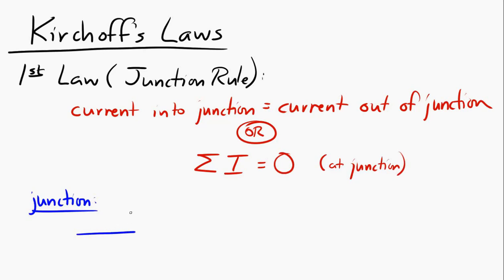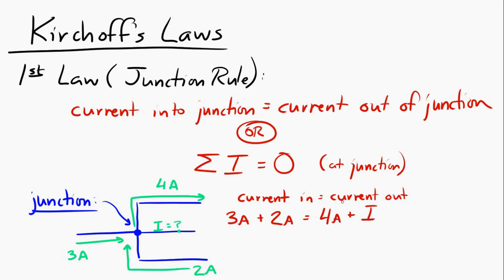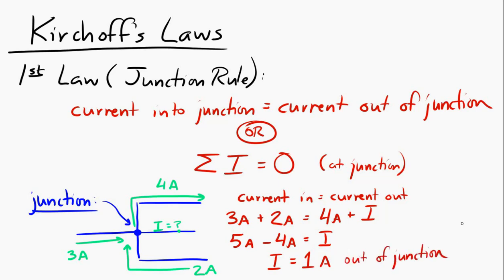If I draw this situation: three amps flowing in from one direction, two amps flowing in from another direction, four amps flowing out, and an unknown current — Kirchhoff's first law says current in must equal current out. We have five amps going in total, so we need five amps coming out. The missing current is one amp coming out. The most important thing to be careful about when applying the junction rule is the sign of the current.